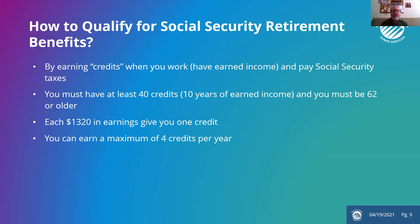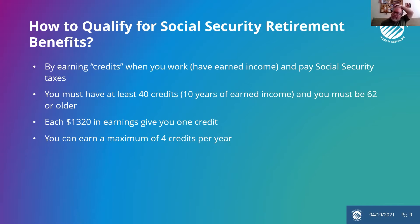So how do we qualify for Social Security retirement benefits? Basically, it's linked to your earned income. You earn credits when you work and have earned income and pay Social Security taxes. You must have at least 40 credits — which is 10 years of earned income — and you must be 62 or older to claim benefits as a retired person. Each $1,320 in earnings gives you one credit, but you can only earn a maximum of four credits per year, so for most people you have to have worked 10 years.